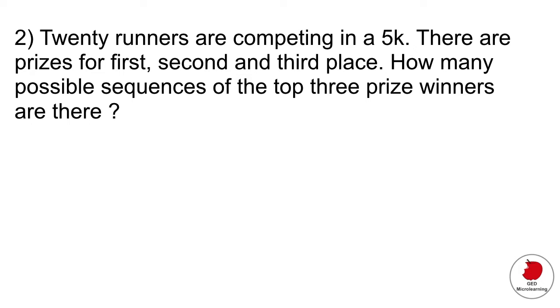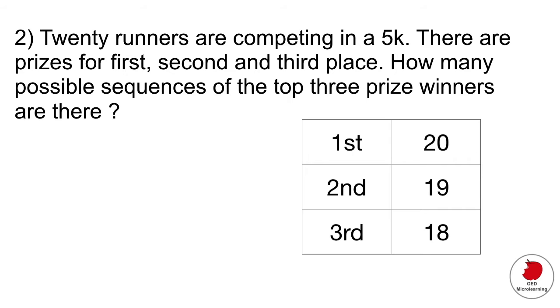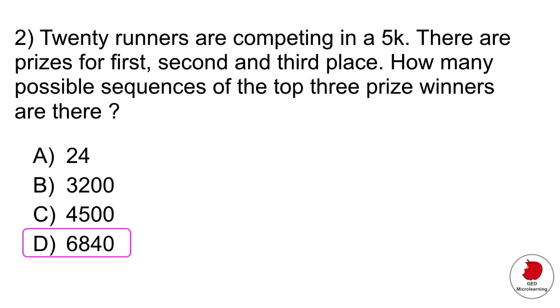The way that I like to think about it is if you think about how many people could be first place initially, it's an equal opportunity scenario. So 20 people could be first place. Once one person becomes first place though, there's only 19 spots left for second place. And then once that person arrives in second place, there's only 18 possibilities of coming in third place. So all you have to do now is multiply those three numbers. 20 times 19 times 18, and that gives you 6,840. That is the possible number of sequences of the top three prize winners.